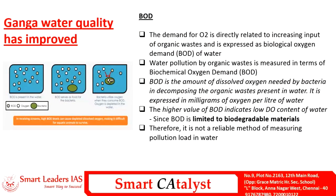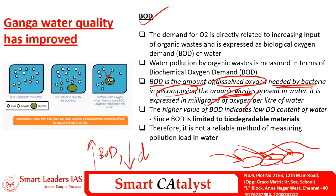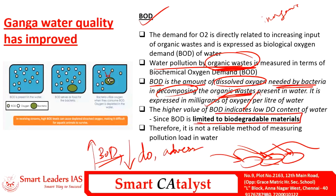Biological oxygen demand (BOD) is the amount of dissolved oxygen needed by bacteria to decompose organic waste dumped into water bodies. It is expressed as milligrams of oxygen per liter. The higher the BOD, the lesser the dissolved oxygen, which is adverse for aquatic species, so BOD should be low. BOD is an indicator of water pollution by organic waste and is limited to biodegradable materials only, making it not a fully reliable method for measuring the entire pollution load of water.